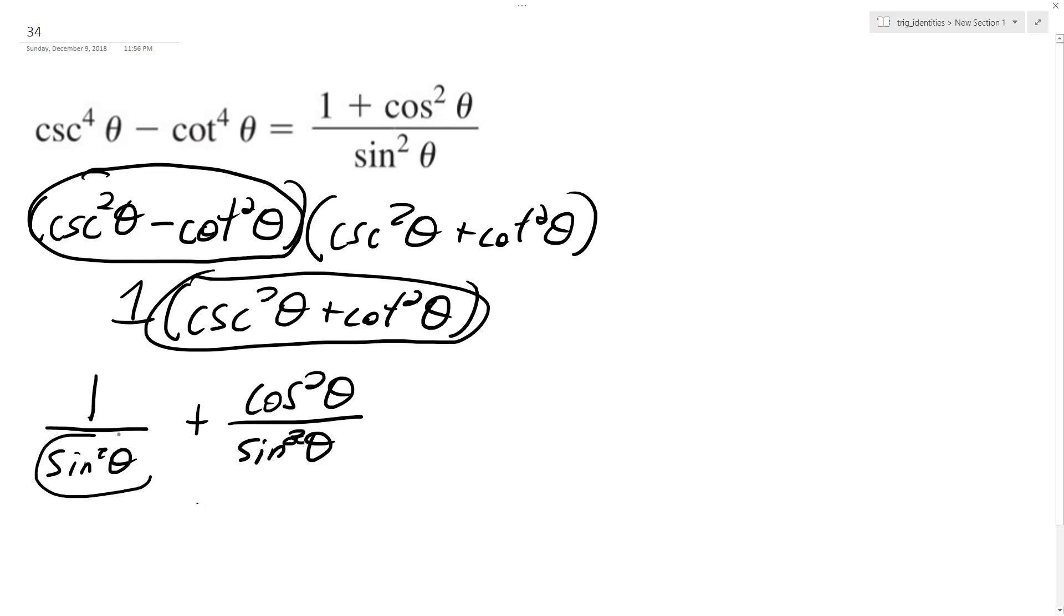And then look, since they have the same common denominator, we just combine those and we get 1 plus cosine squared theta over sine squared theta, which is equal to what's on the right here.